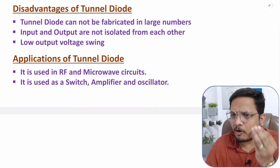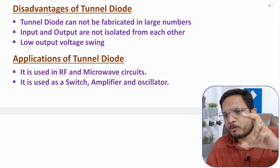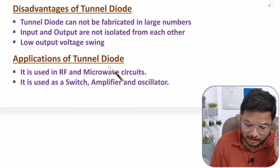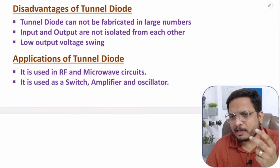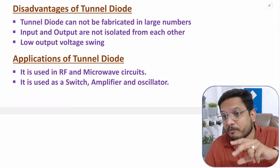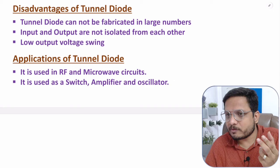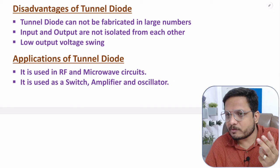Tunnel diode has a lower output voltage swing — you get an output voltage swing of around 1.1 V. As for applications, we use it in RF and microwave applications. The majority of applications are based on switching, amplifier, and oscillator functions, all performed at very high frequency due to the fast switching speed of tunnel diode. I hope you have understood this; if you have anything to share, please note it in the comment section. Thank you so much for watching.